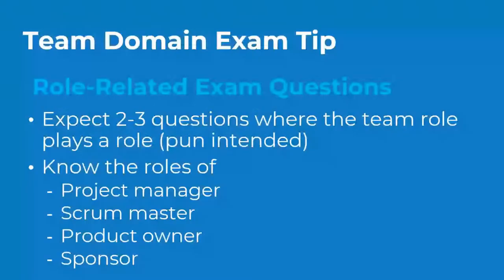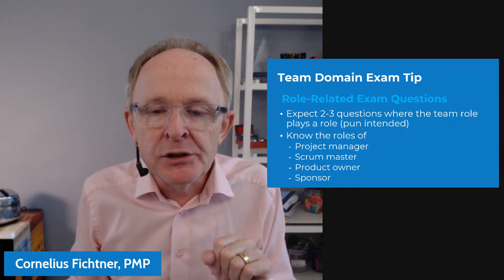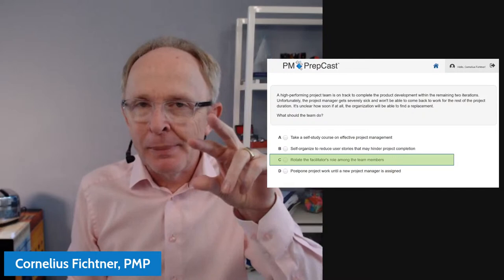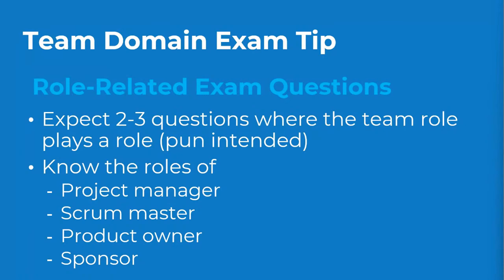An exam tip from the team domain: previous students tell us that there are often role-related questions on the test. Having a good simulator that includes plenty of test questions to check your understanding of roles — including Scrum Master and project manager — will help you before exam day. Expect two to three questions where team roles play a role. The previous question illustrated this: to determine that B is wrong, you had to know it's the product owner's job to manage the backlog, not the team's job.